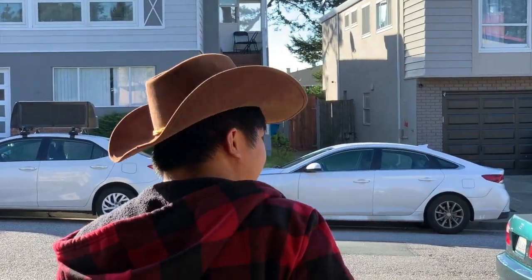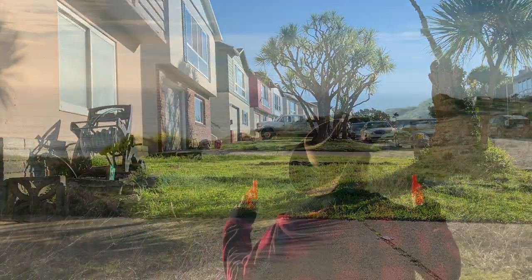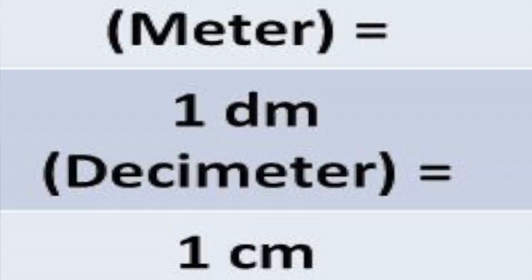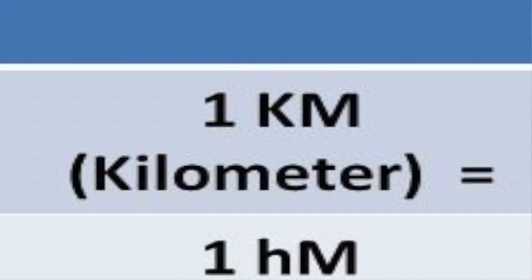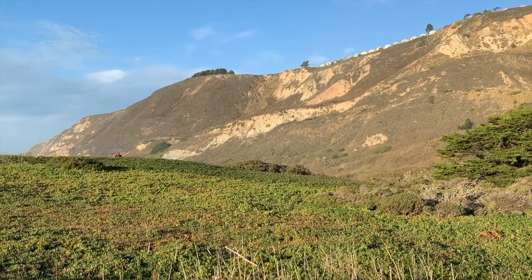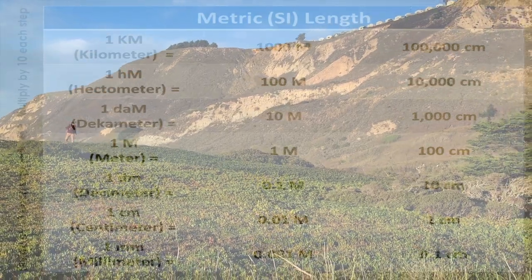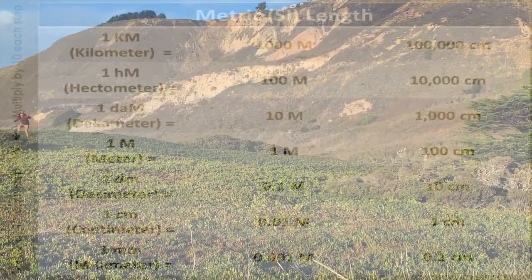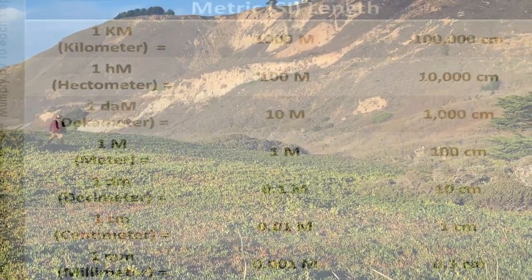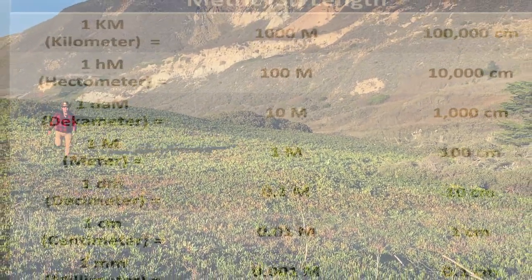Now I'm going to convert one decimeter into kilometers. As the diagram I'm showing you right now, you can see that you can move the decimal since kilometers is four decimals away from decimeter. So one decimeter would equal 0.001 kilometers.